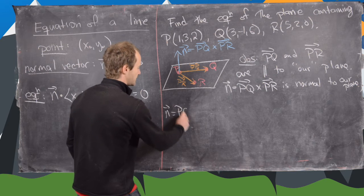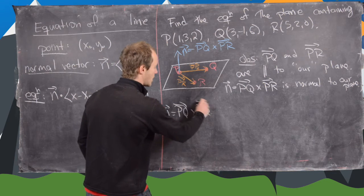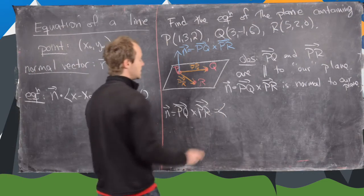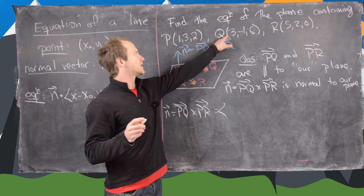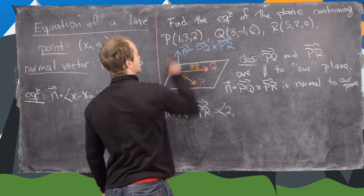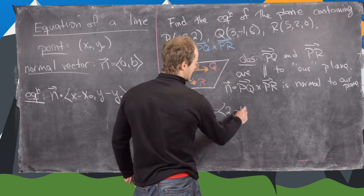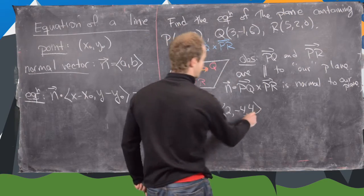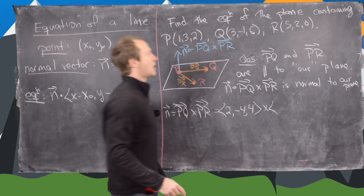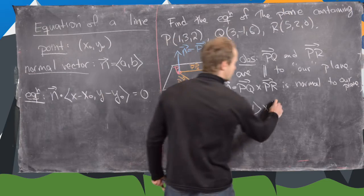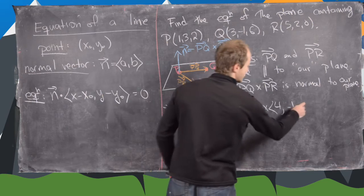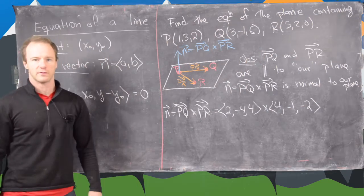We need to calculate PQ cross PR. Notice PQ is Q minus P, which gives us (3-1, -1-3, 6-2) = (2, -4, 4). And PR is R minus P, which gives us (5-1, 2-3, 0-2) = (4, -1, -2). So that is the cross product we need to compute.